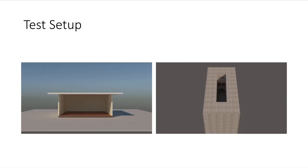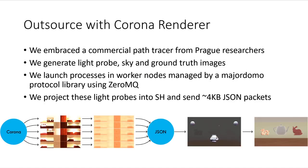So let's take a look at our test setup. We used a simple open-faced building and the Spohns atrium. The premise is that these are models that need indirect illumination to see inside of them due to lack of direct illumination. The big component that helps us do the path tracing work is the commercial software Corona renderer which is made in Prague. We created a small library that uses the major Domo protocol using 0MQ to enable remote worker nodes to launch Corona processes. Then we project to spherical harmonics and send them back as JSON. We are working on expanding this to work on larger network setups, but that is future work.